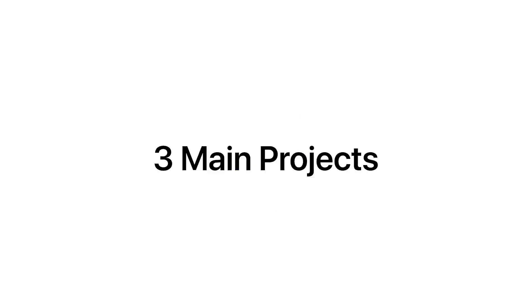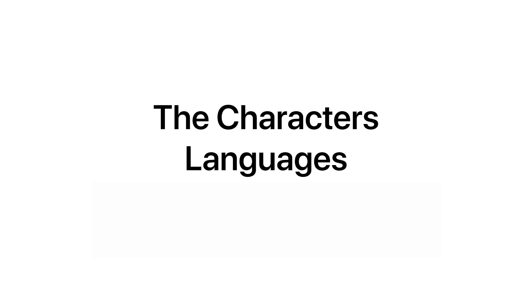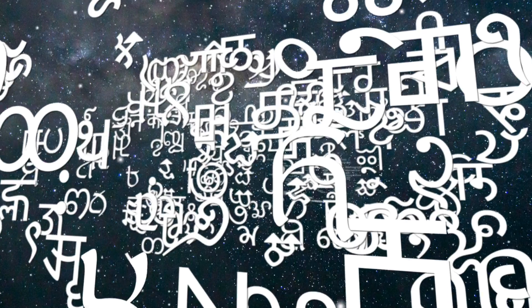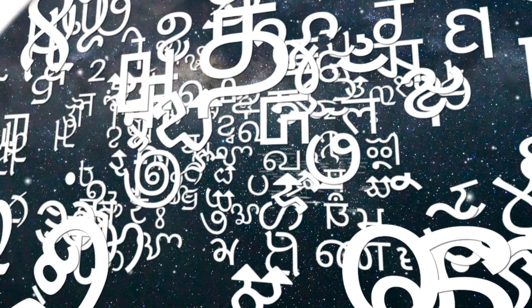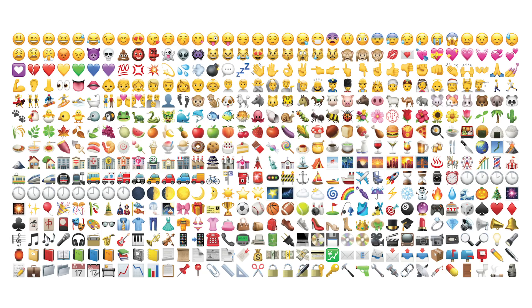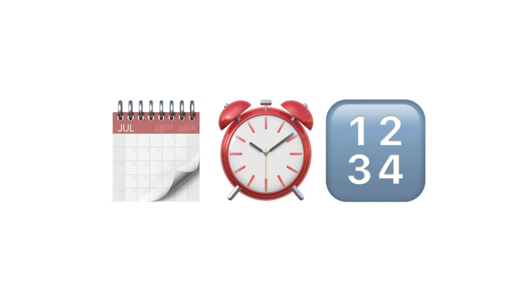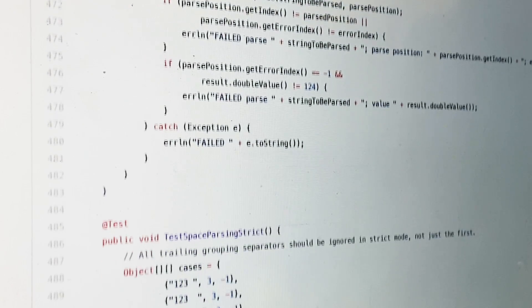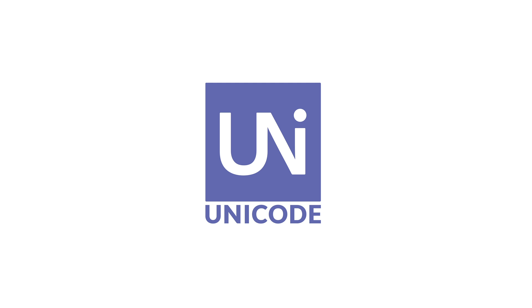The Unicode Consortium has three main projects centered around characters, languages, and programming code. There are well over 100,000 characters for the languages of the world, plus all the emojis. But more than just those characters, languages need special information for support on computers and phones — for example, how do you alphabetize? How do dates, times, and numbers work? And finally, computers need programming code to make this all come to life. These are aspects that Unicode helps make happen.